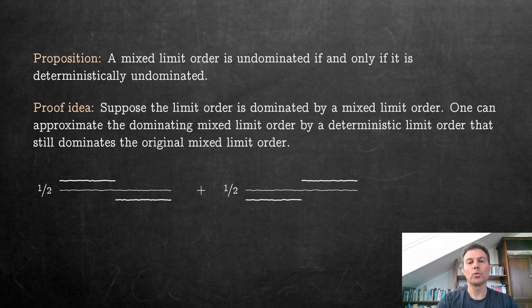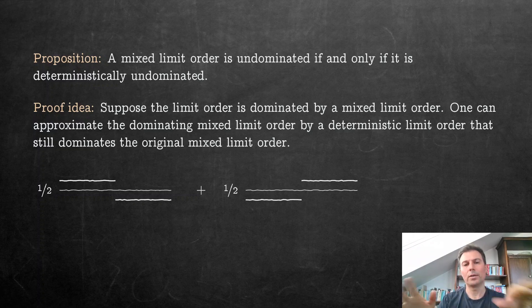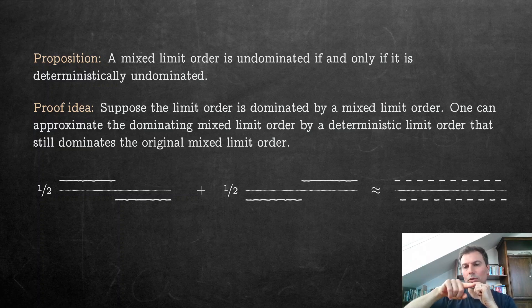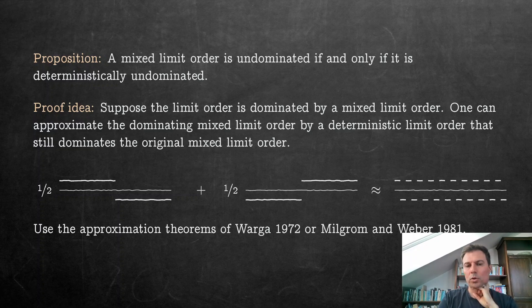So conceptually, suppose you have these two limit orders here and you're randomizing with the coin flip between the two. So then what you can basically do is you can sort of represent it by a highly oscillating limit order that is however deterministic. So if you go from low prices to high prices you frequently switch between buying and selling. And that would essentially give you the same payoff and that can be shown using the approximation theorems of Varga or Milgrom and Weber.